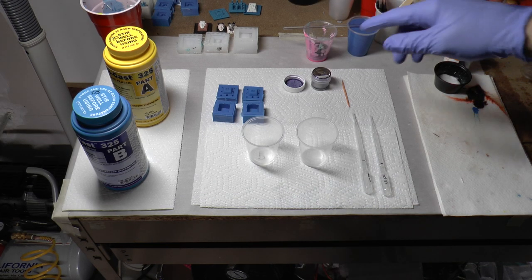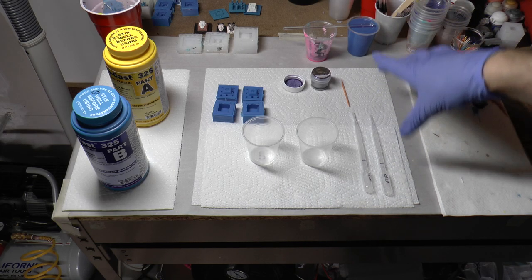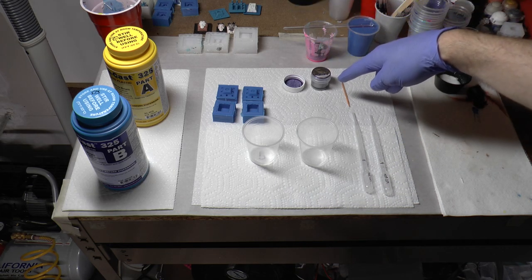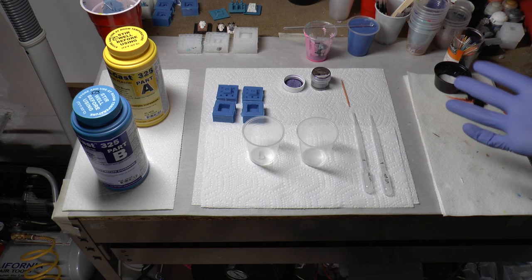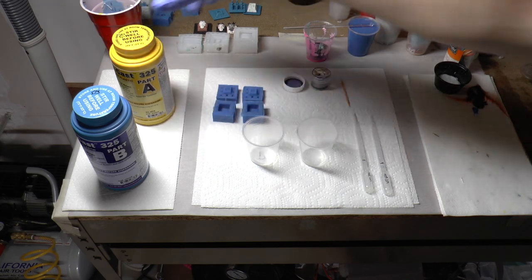Okay, let's make some keycaps. I've got the setup right here and everything is nice and clean. All we're going to be doing with this one is making purple blanks that are somewhat transparent. I'm going to be using the SmoothCast 325 for that.